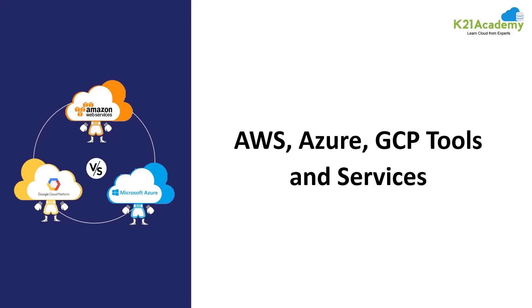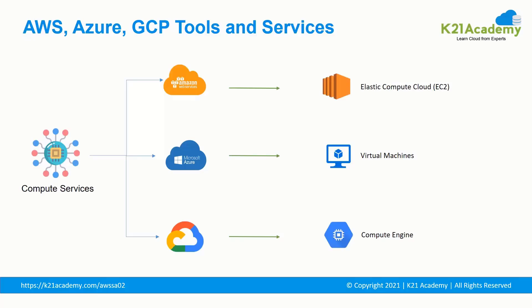AWS, Azure and GCP provide many services divided under categories or domains such as compute, networking, storage and so on. The first category is compute — the ability of a computer to perform work, often considered in terms of the number of instructions that can be carried out. AWS has Elastic Compute Cloud (EC2), which is used to create instances and provides secure, reliable compute capacity in the cloud. Azure VM gives you the flexibility of virtualizing without having to buy and maintain physical hardware. GCP offers Compute Engine, a compute service that lets you create and run virtual machines on Google infrastructure.